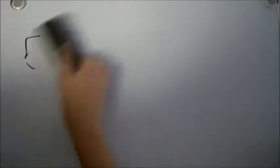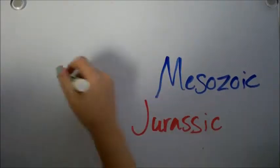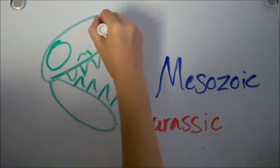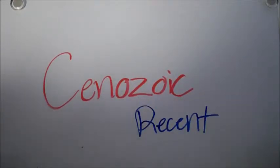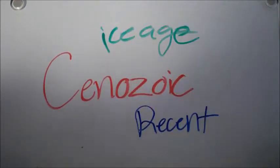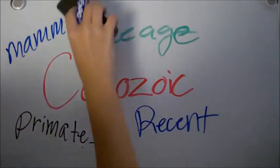Then came Mesozoic, where the popular Jurassic times. You know what? The dinosaurs. My favorite movie. Then came Cenozoic, which is more the recent times, including Ice Age and the primates and us mammals. Yeah, we're mammals.